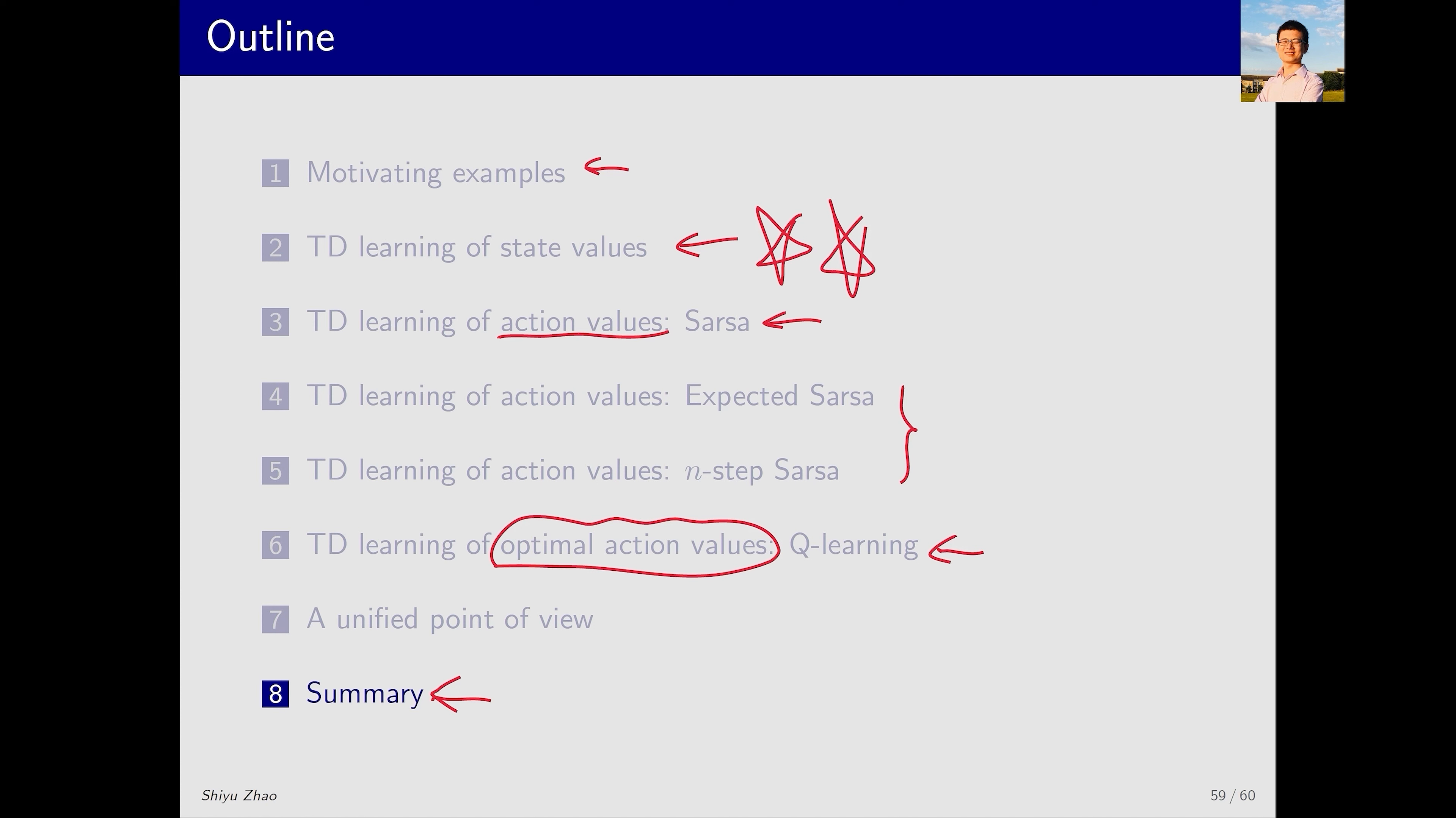In addition to that, we introduced the concept of off-policy and on-policy. We also explained that SARSA and Monte Carlo algorithms are on-policy, while Q-learning is off-policy. In the next lecture, we will introduce deep Q-learning. When combining neural networks with TD algorithms, why do we choose Q-learning? The off-policy property of Q-learning plays an important role.